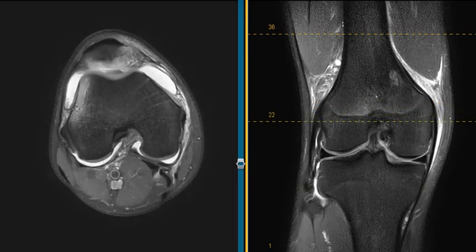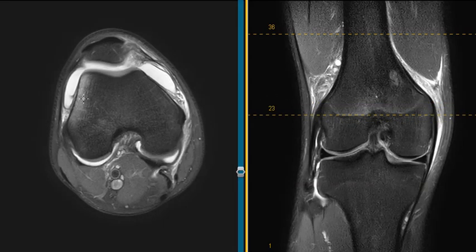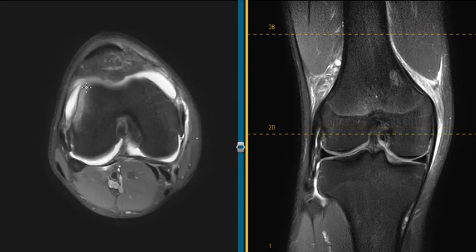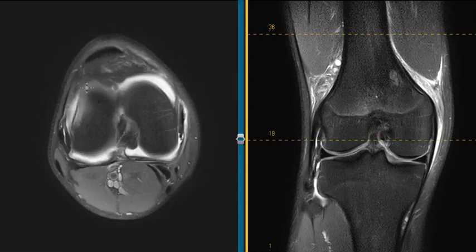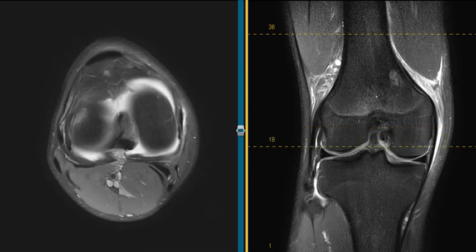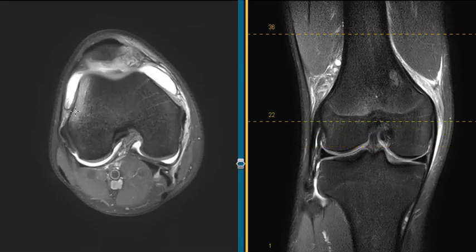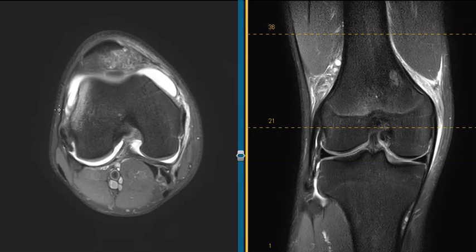These bone bruises are usually above the articular surface, but sometimes they can come all the way down to the articular surface. Like right here — this little area is part of the articular surface. Most of that injury, though, is above the articular surface.